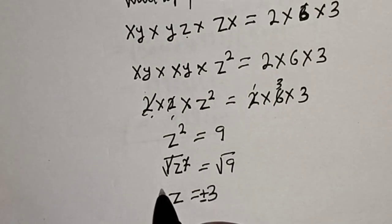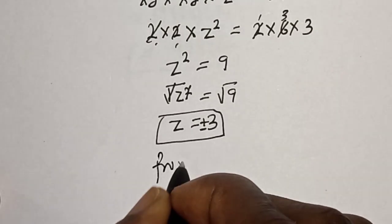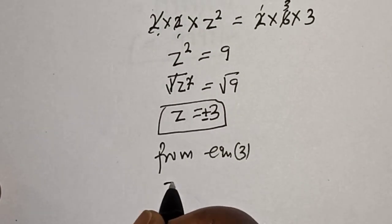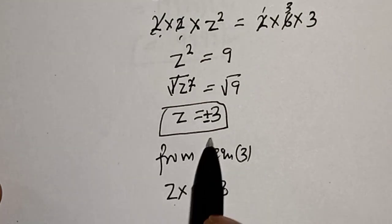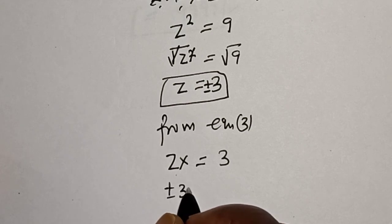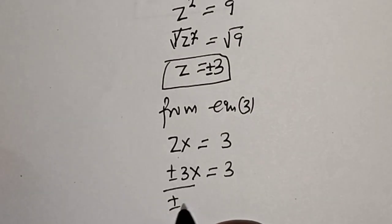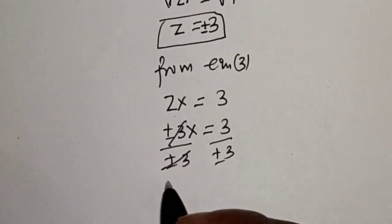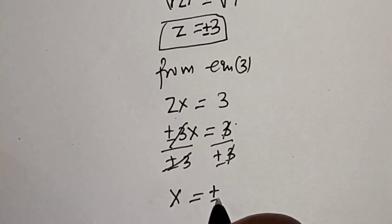From equation 3, zx is equal to 3, and we already know z is plus or minus 3. Dividing both sides by plus or minus 3, x is equal to 3 over plus or minus 3, which gives x equal to plus or minus 1.